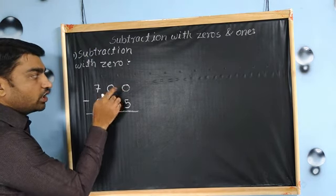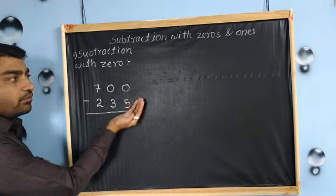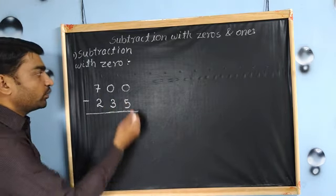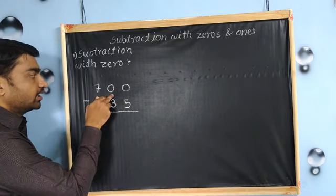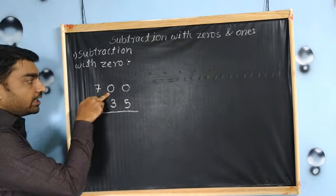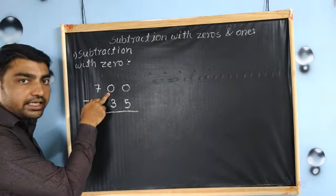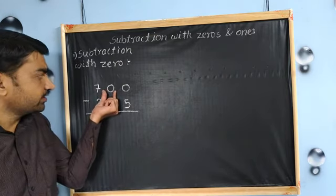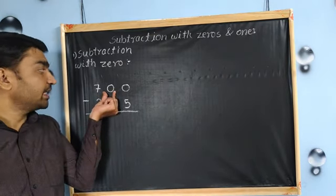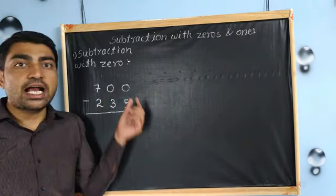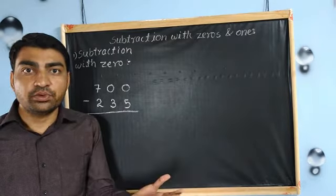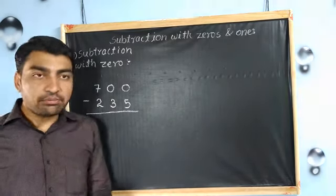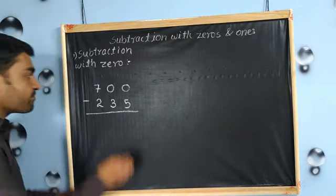So for that, we need to take help from the highest place — we need to regroup tens. But at tens place, again there is zero. So in that case, this zero will say to this zero: I can't help you, I only need help. Let me take help, then I will help you.